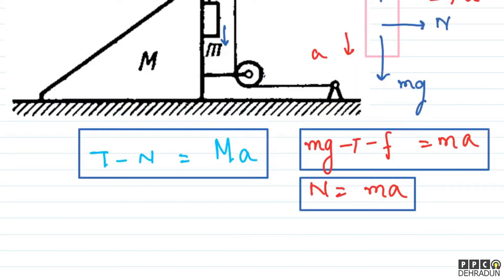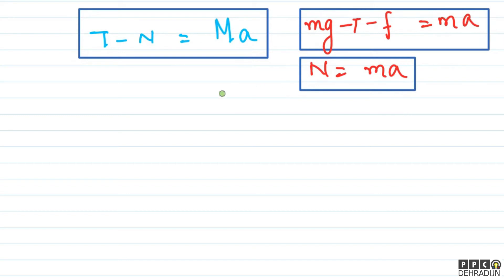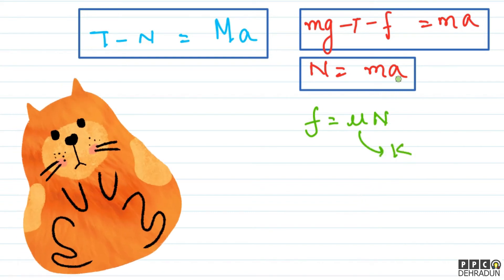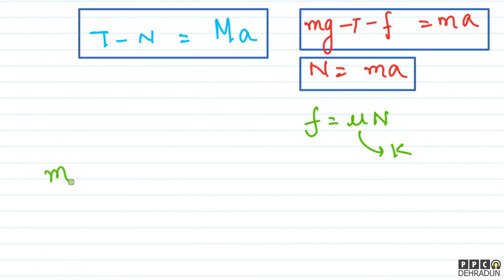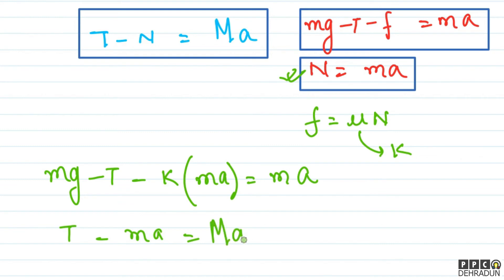Sawaal mein humse acceleration of the body small m puchha gaya tha — toh pehle a nikalna hoga, phir root 2 times a hamara answer hoga. Friction ki value simply mu into N hai, aur mu ki value k hai. Toh ek equation ban jati hai: mg minus tension minus k times normal equals m into a. Normal ki value hum yahan se utha sakte hain jo ki m into a hai. Aur doosri equation: tension minus m·a equals capital M into small a.